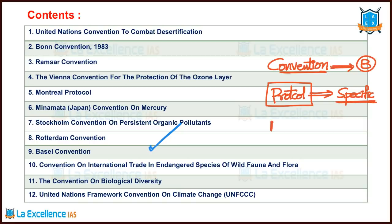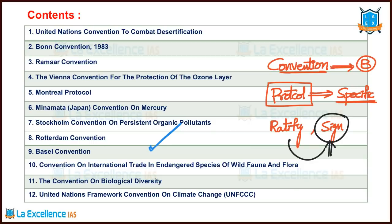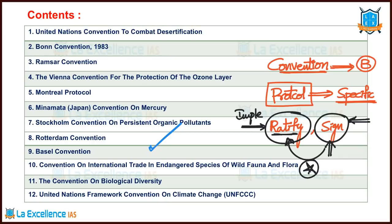For providing specific guidelines, we have protocols. And then we also listen to words called ratification, signing, ratify and sign. These are two important words that we often hear with regard to environmental conventions. When a convention is there, the country signs first. After that, when they implement the provisions of the convention, they ratify it. Ratification means agreeing to implement. Sign means agreeing to be part of that. If we sign, we need not implement it. Only when we ratify a convention do we try to implement it.